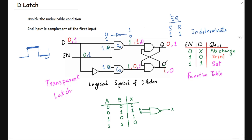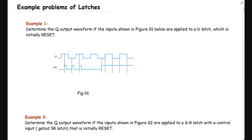The latch responds to a high-level signal. Initially it was reset, and then as the enable goes high, the data will be transferred to the output Q, which is high. Now at this state the enable is 0, so the previous state will not change. The previous state was a high signal at output Q, so it will remain high.